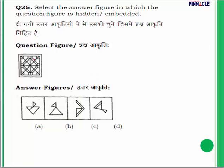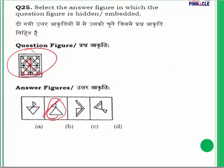Question 25: Find the hidden or embedded figure from the given options. Looking at the given figure carefully, the shape from option B is embedded within it — visible as a distinct sub-figure. Option B is the correct answer. That concludes all reasoning questions — thank you very much.